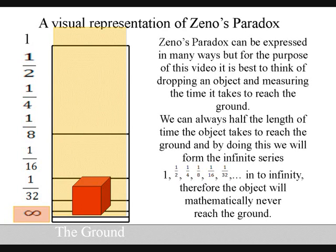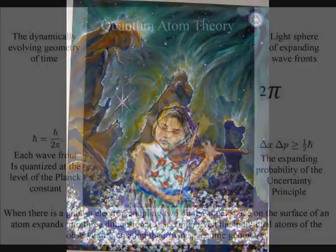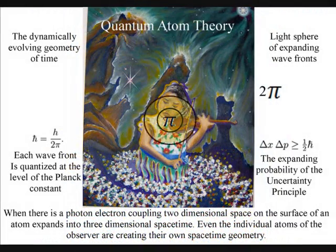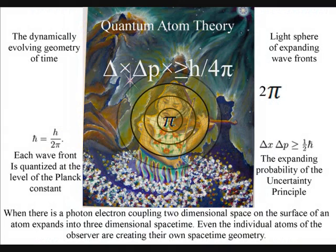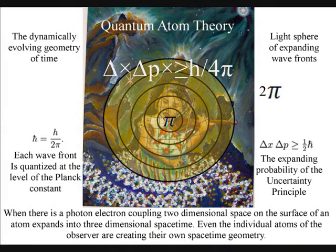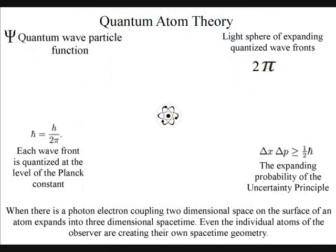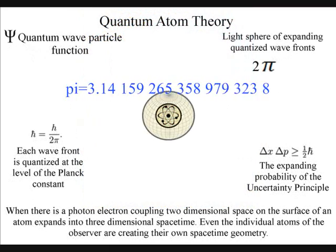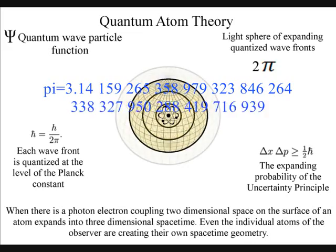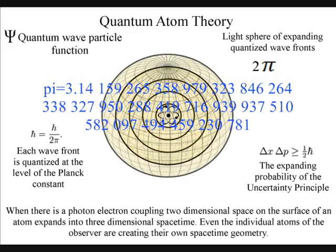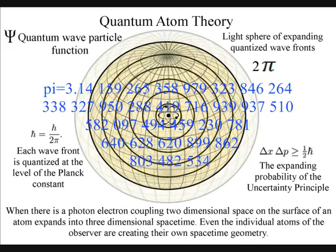Zeno rejected the idea of infinity and so he had a paradox and believed that movement and change to be an illusion and that only what was mattered. But the theory I am now going to explain does not reject infinity but explains it as a universal process that forms the arrow of time and geometry of spacetime. This does not mean that Zeno was wrong, it just explains a physical process that forms the mathematical paradox.